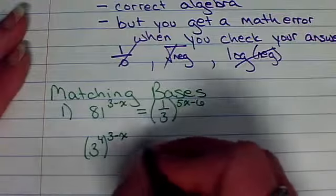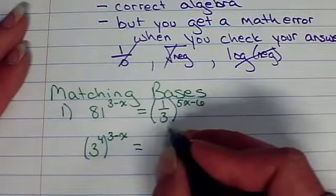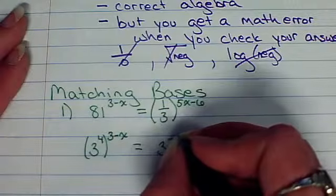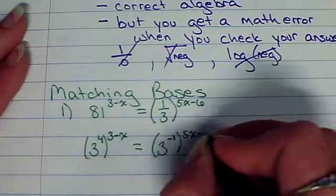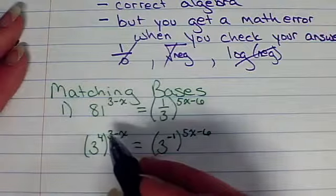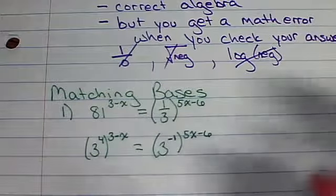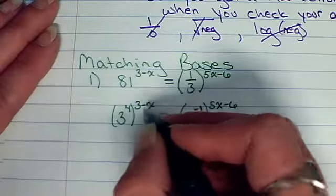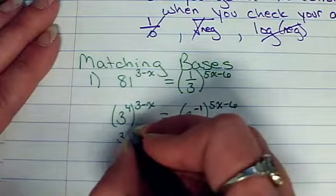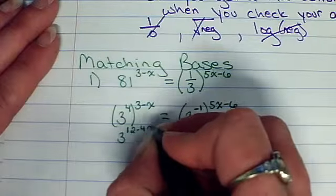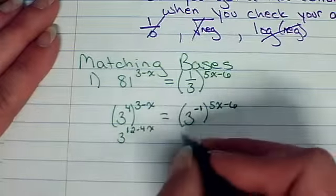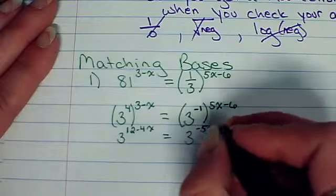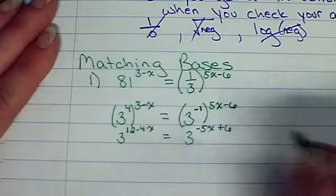And all of that's going to be to the 3 minus x. How can I rewrite 1/3 as 3 to some power? Well, remember, that would have to be a negative exponent. That would be a negative 1. Now, power to another power. The shortcut we always joke about is 2 in the sky. We're going to multiply. So I'm going to multiply this 4 times everything up here. So that's going to give me 3 to the 12 minus 4x. Be very careful with that. You want to distribute it to everything. And over here, negative 1 times 5x is going to be negative 5x. And then negative 1 times the negative 6 is going to be positive 6.